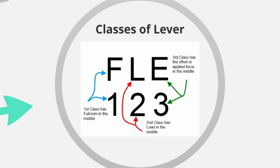The hardest thing is remembering which order the classes are in. A good way to remember is with the letters FLE and the numbers 1, 2, 3 directly underneath. F and 1 represent a first class lever with the fulcrum in the middle. L and 2 represent a second class lever with the load in the middle. E and 3 represent a third class lever with the effort in the middle. The numbers represent the class of lever, and the letters represent which feature is in the middle of the lever arm.